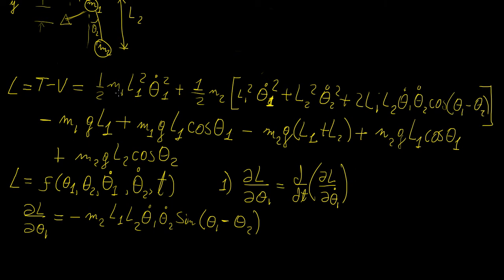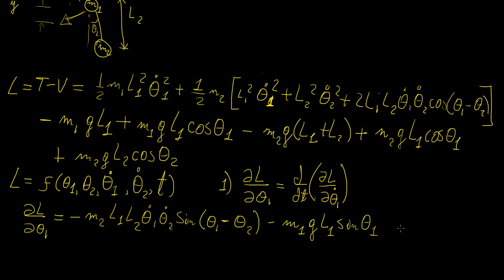The other terms are zero except for the potential energy terms. Differentiating the cosine terms gives a minus sign, so we get minus M1 G L1 sine(theta1) minus M2 G L1 sine(theta1). And that's it for the partial of L with respect to theta1.